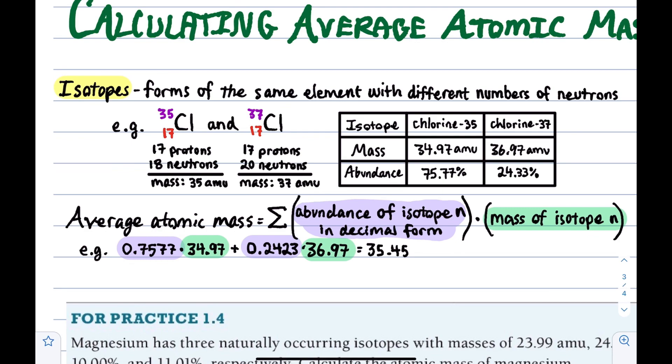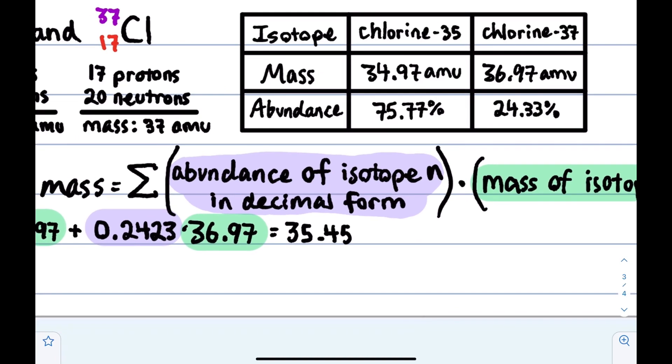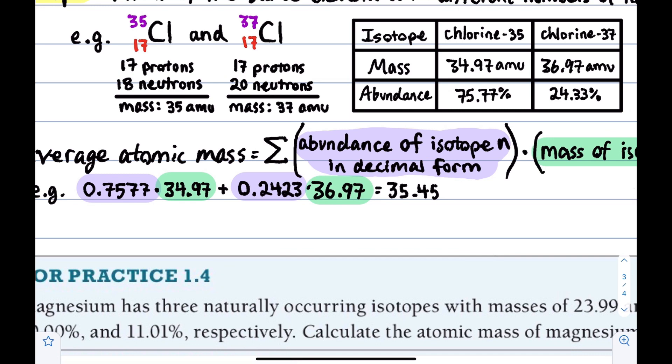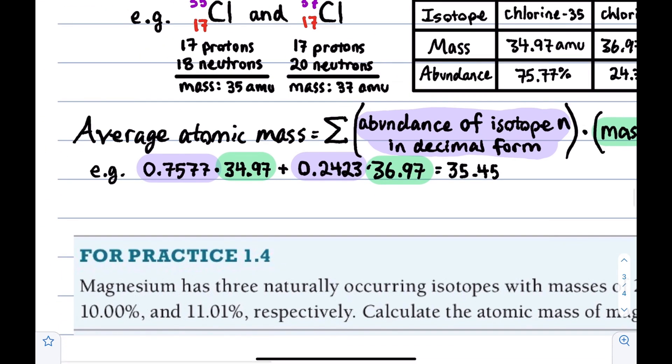So when I say abundance in decimal form, do you see the percents of like 75.77, 24.2? There are some typos in here. The correct numbers are in here. Maybe I should call them rightos instead of typos. But those numbers, for example, this should be 75.77 is going to turn into 0.7577. How do we do this? We divide by 100. Why do we divide by 100? Because it is a percent. Percent literally means per 100. So we're dividing by 100.